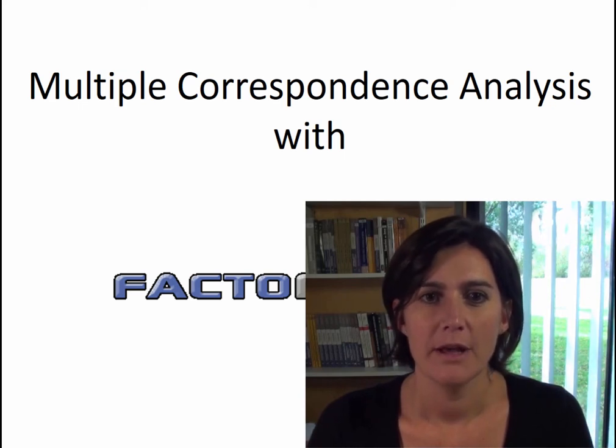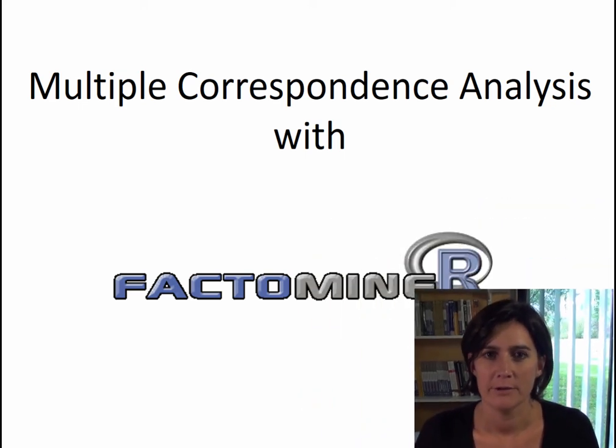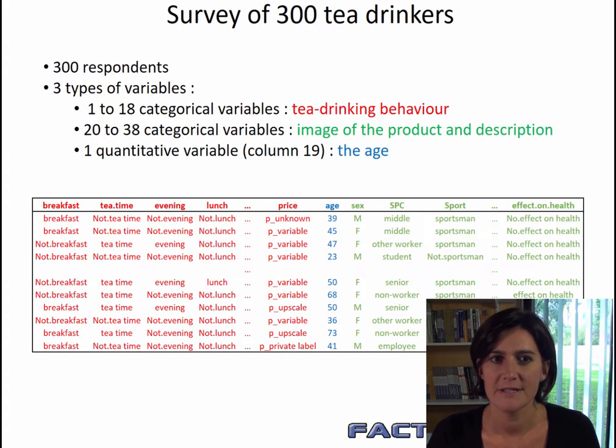We are now going to see how to do MCA using FactoMiner. The dataset we are going to use deals with tea consumption.